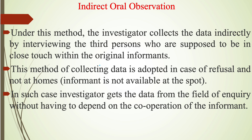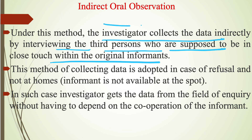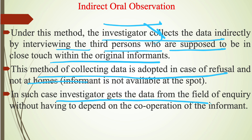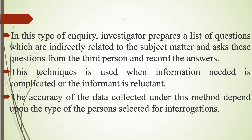Under indirect oral observation, the investigator collects data indirectly by interviewing third persons who are supposed to be in close touch with the original informants. Direct observation is not done; data is collected indirectly from related persons. This method is adopted when informants refuse to cooperate, are not available at the spot, or are not willing to give answers. The investigator gets data from the field of inquiry without depending on the original informant's cooperation.